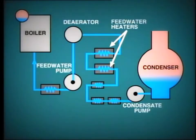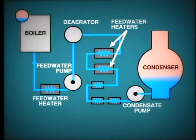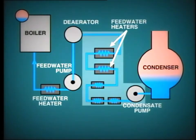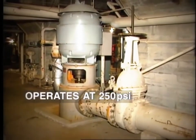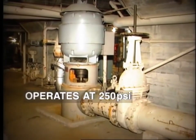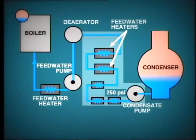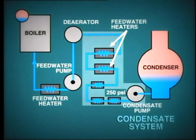The boiler feedwater pump draws condensate from the de-aerator and pumps this through further closed feedwater heaters, one in this example, and on into the boiler. We have, in fact, two pumping loops to transfer the water from the hot well to the boiler. First, the condensate pump pushes the condensate through the coolers and closed feedwater heaters and up into the de-aerator. In order to achieve this, the condensate pump must operate at a pressure of about 250 PSI. This part of the system is known as the condensate system.